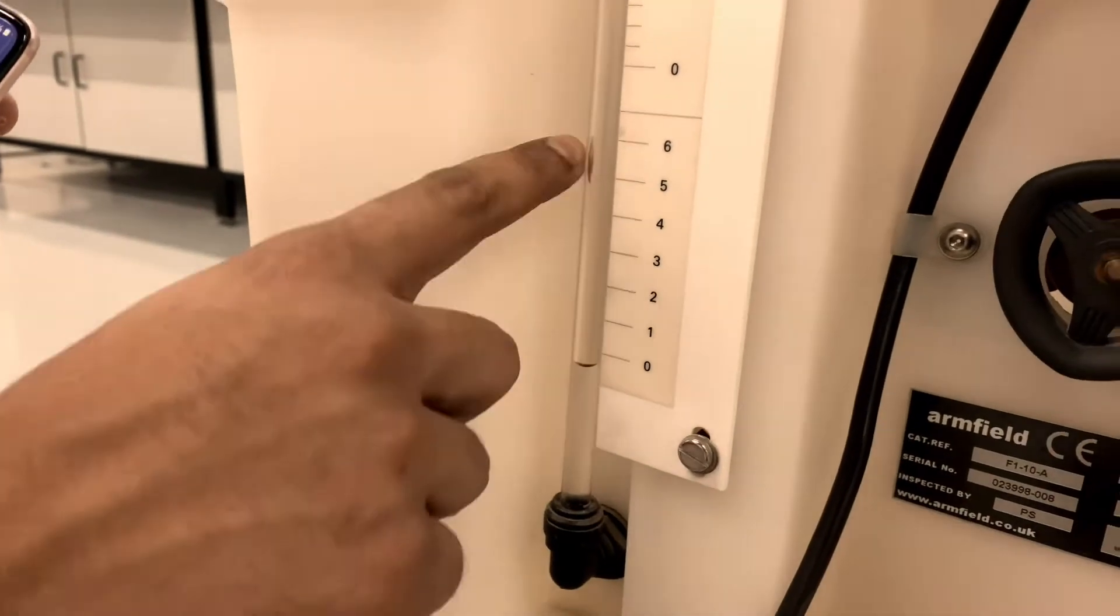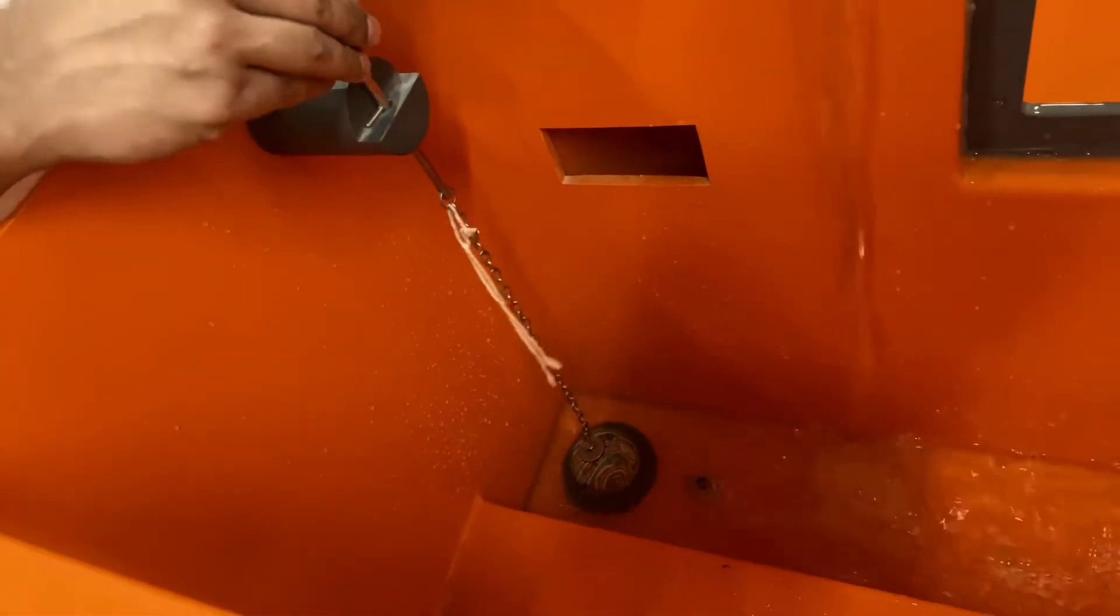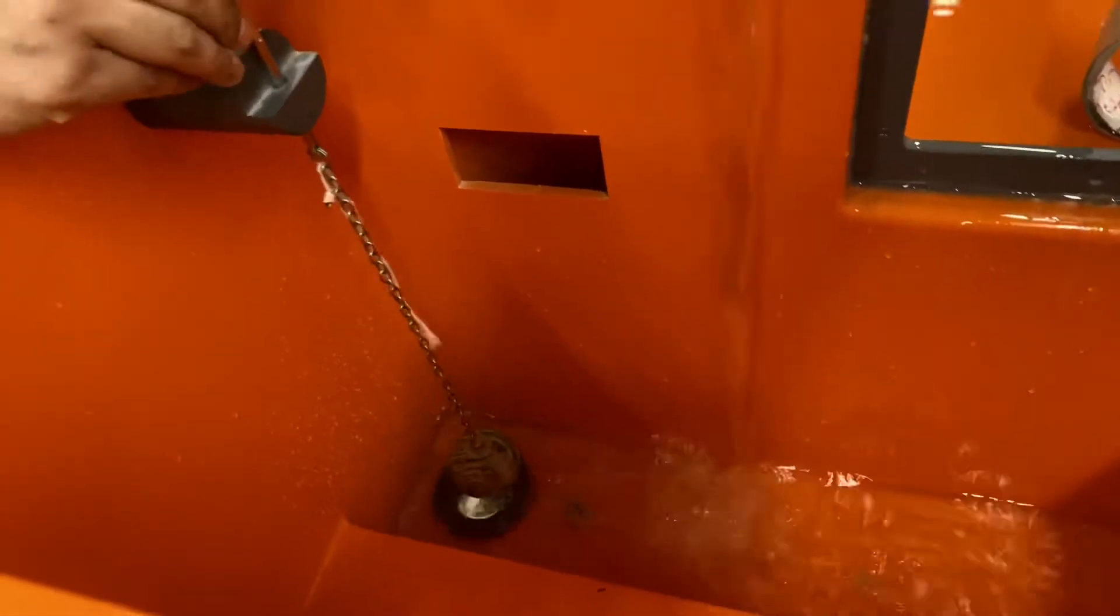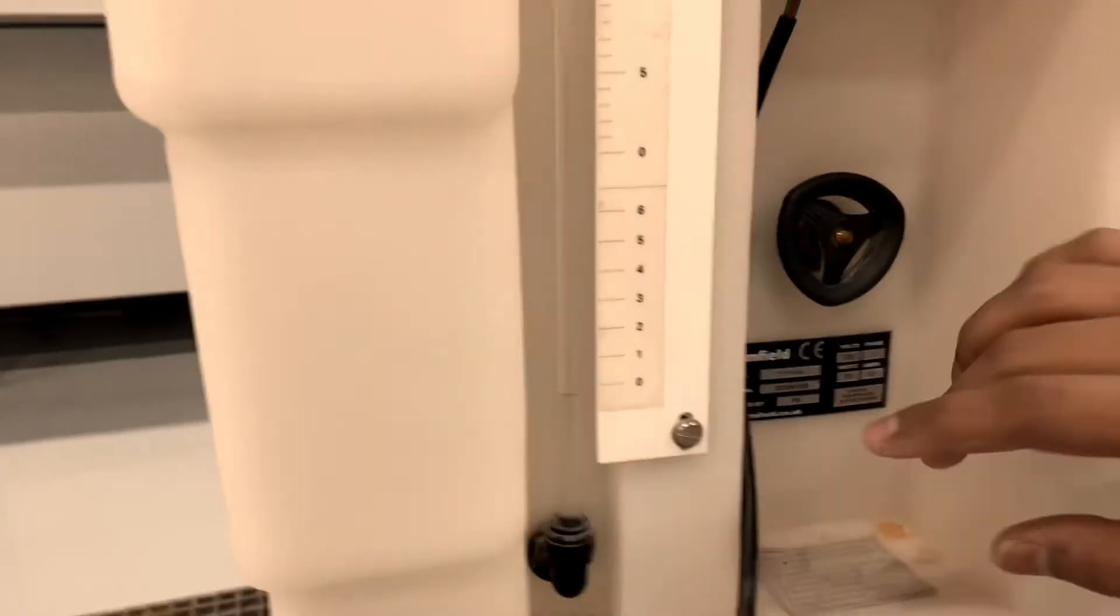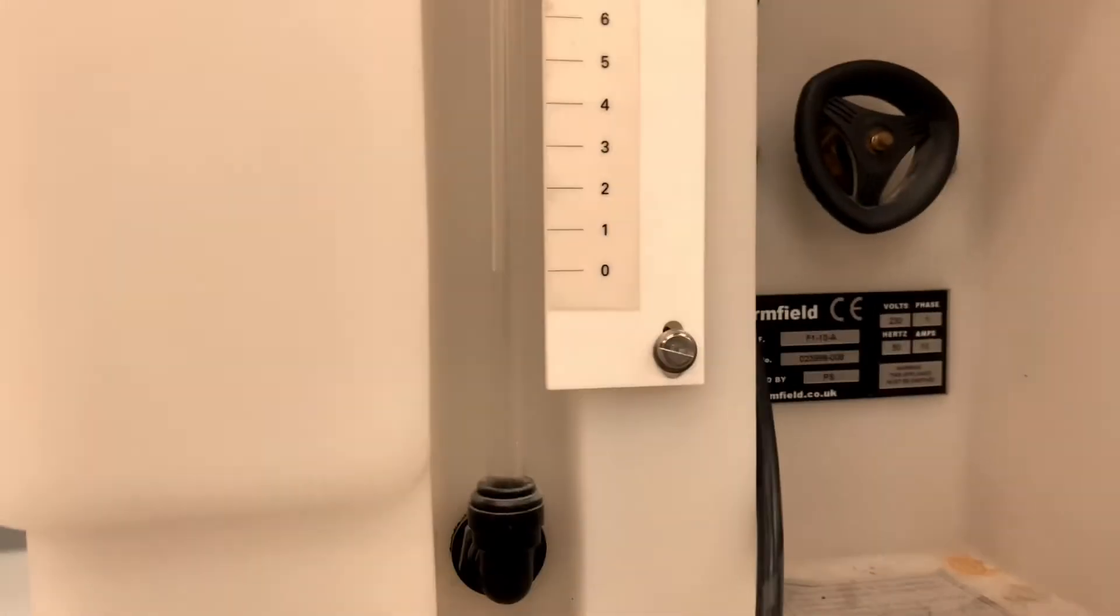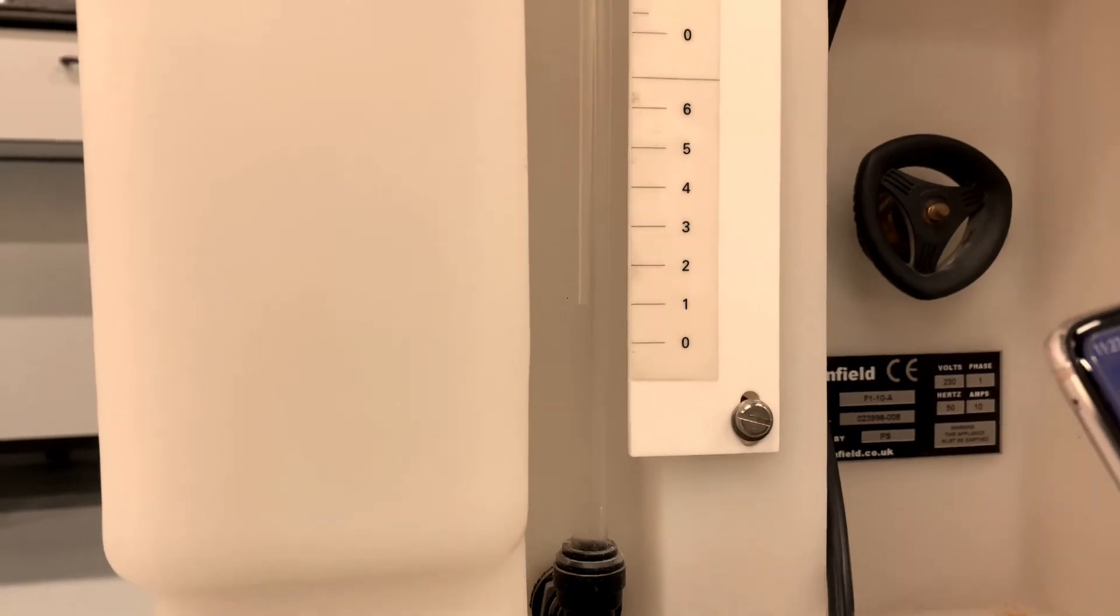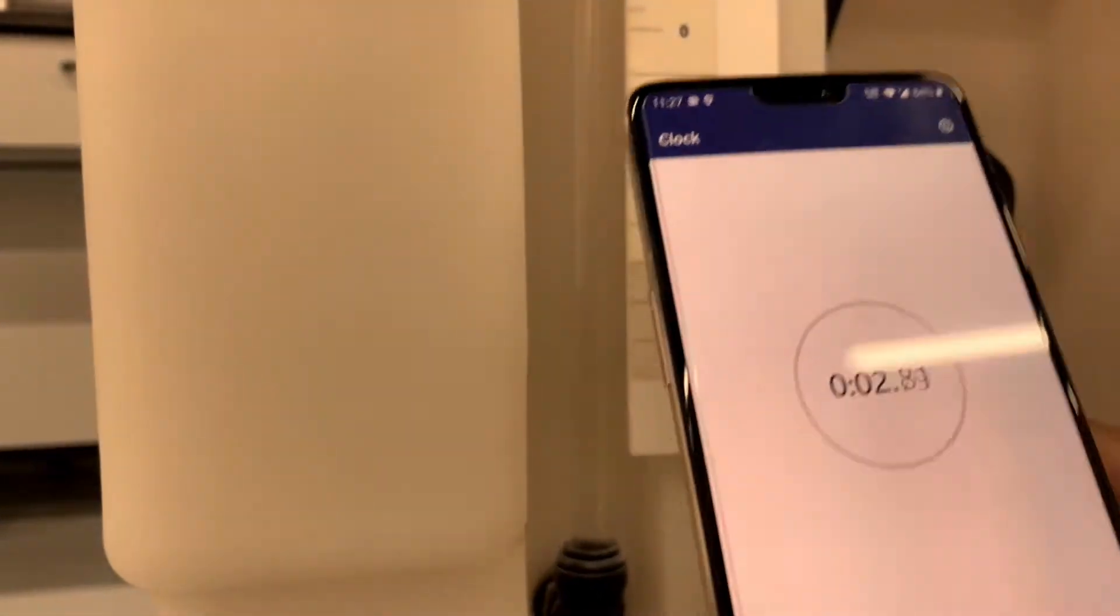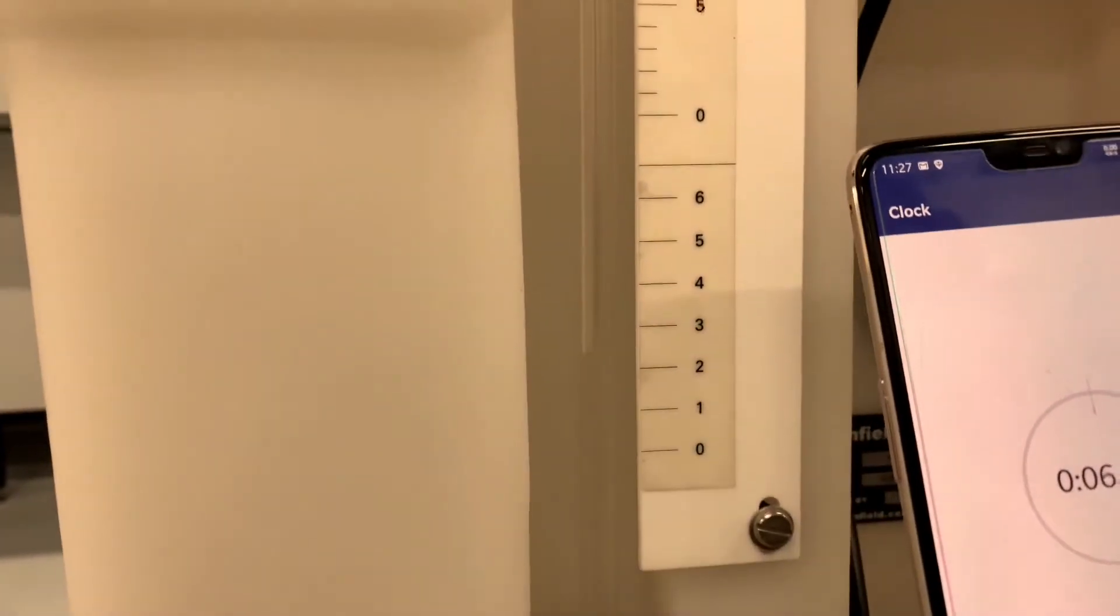How do we get the volume up? We need to close the drain like this. Keep it open for now. We will come back to this location, and I have closed it. I will start, let's say, from 1 to 6. I have started the stopwatch, and when it reaches 6, I will stop the stopwatch.